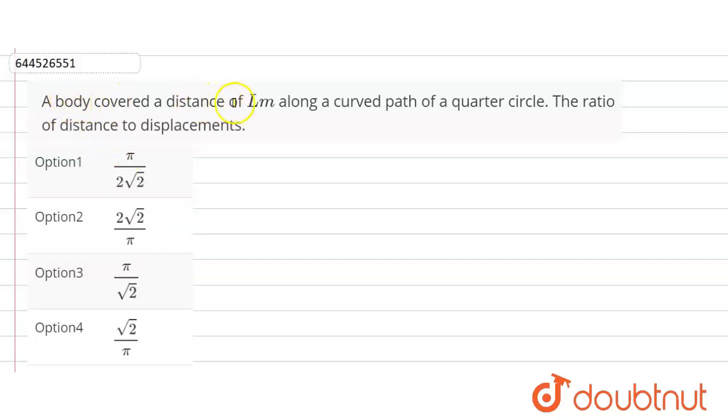The body covers a distance of L meters along a curved path of a quarter circle. The ratio of distance to the displacement.